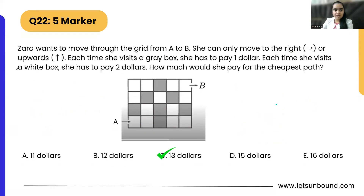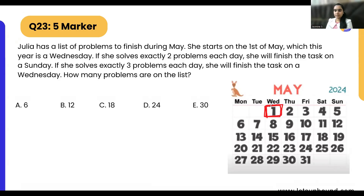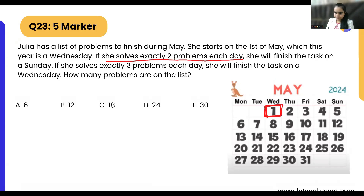Question 23: Julia has a list of problems to finish during May. She starts on the 1st of May, which is a Wednesday. She solves exactly two problems each day and will finish on a Sunday. Looking at the calendar, Sundays fall on the 5th, 12th, 19th, or 26th.